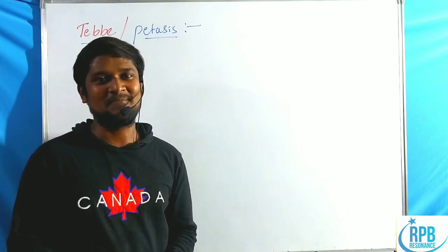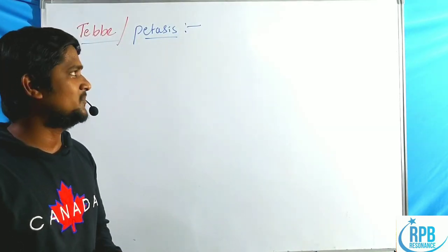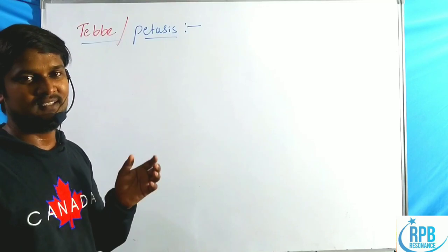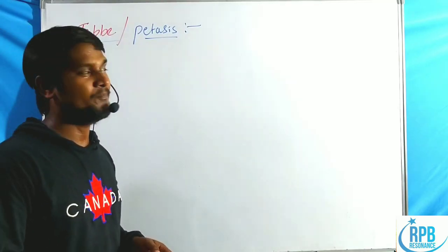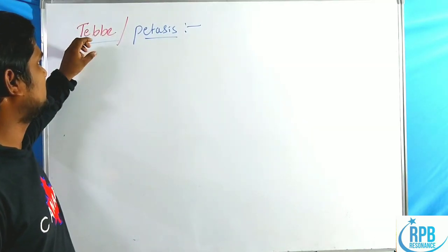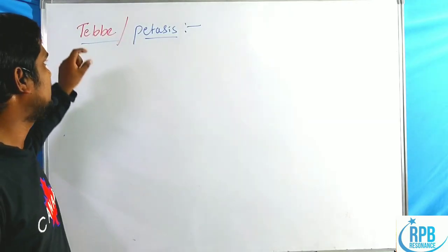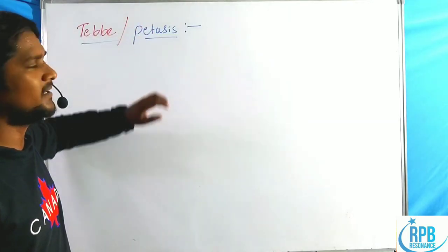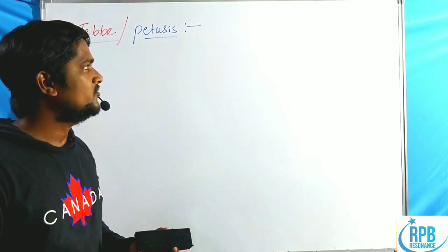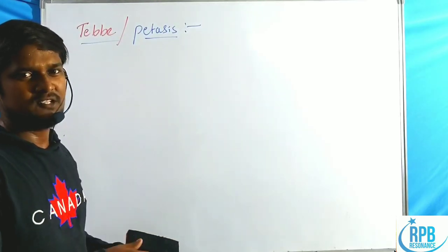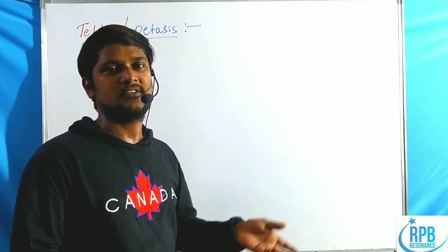Hi guys, welcome to the RPP Resonance Commission. We are discussing another important lecture for CSIR NET and GATE. This topic belongs to the C=C category: the Tebbe and Petasis olefination. In previous lectures we discussed Wittig reactions and Julia olefination.